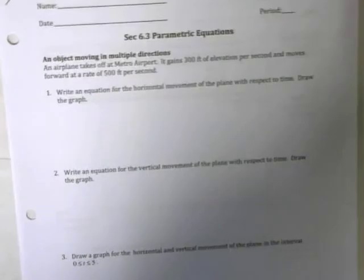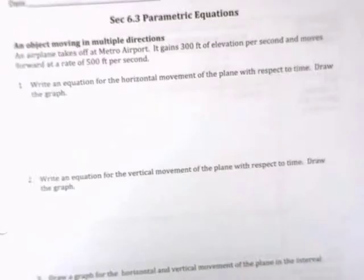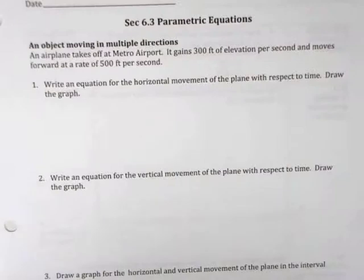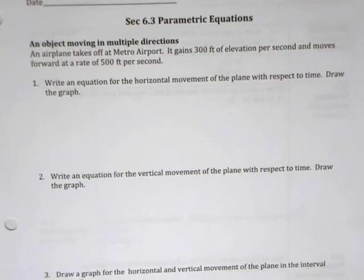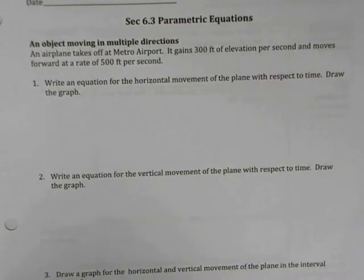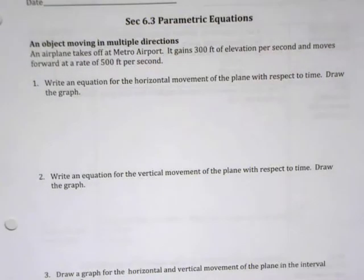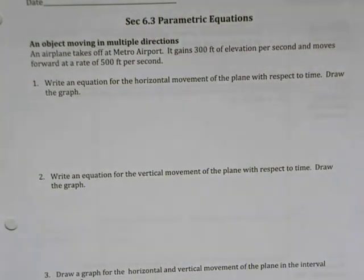Hello students and welcome to a lesson on parametric equations. Before we actually dive into what a parametric equation really is, let's investigate a quick example. An airplane takes off at Metro Airport; it gains 300 feet of elevation per second and moves forward at a rate of 500 feet per second. We have a couple of questions to answer: first, write an equation for the horizontal movement of the plane with respect to time and draw the graph.